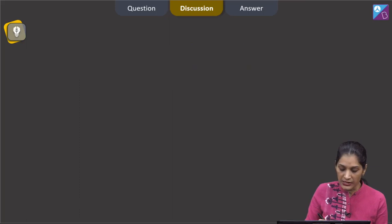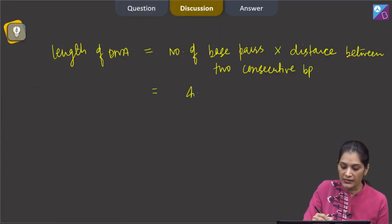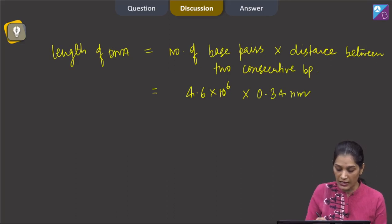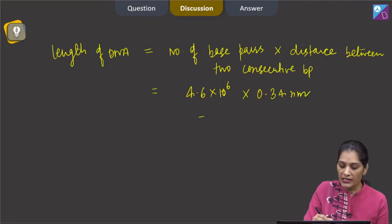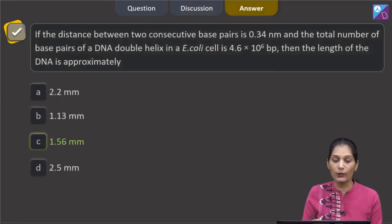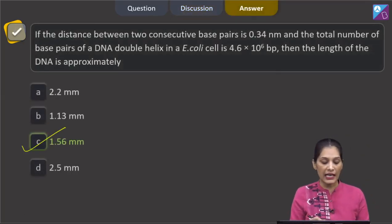The number of base pairs are 4.6 into 10 raised to the power 6 and the distance is 0.34 nanometer. If you multiply this, you will find out that it comes out to be 1.56 mm. So the correct option for the given question is option C, which says 1.56 mm.